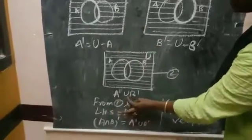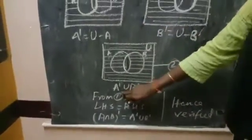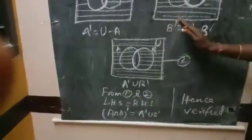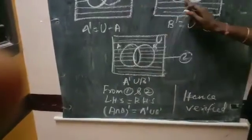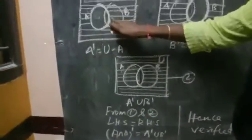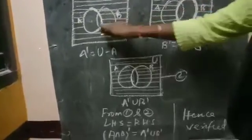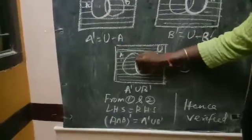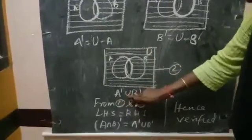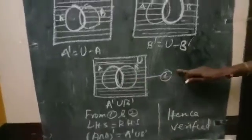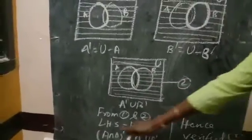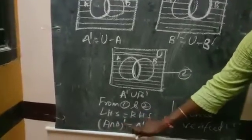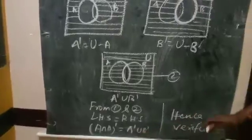Then comparing the two, we draw A'∪B'. Union means we shade them together — A' and B' combined. Comparing both results, we shade all parts except A∩B. So A'∪B' gives us the same shaded region — this is the second one. From 1 and 2, we get LHS equals RHS. Therefore (A∩B)' = A'∪B' is verified.